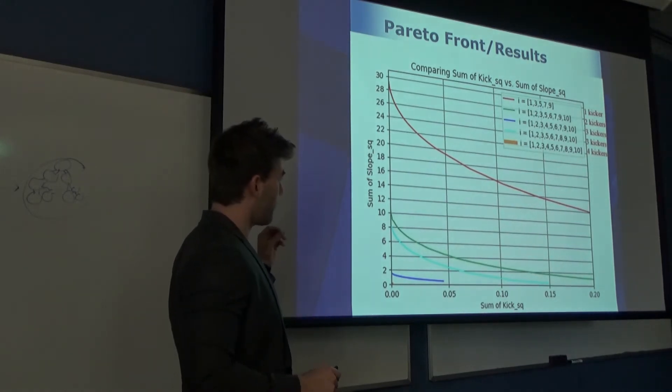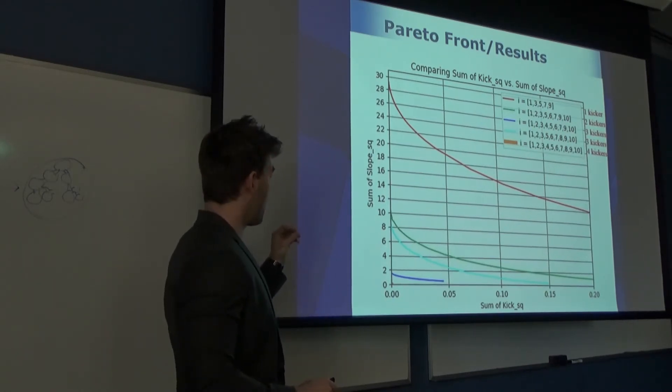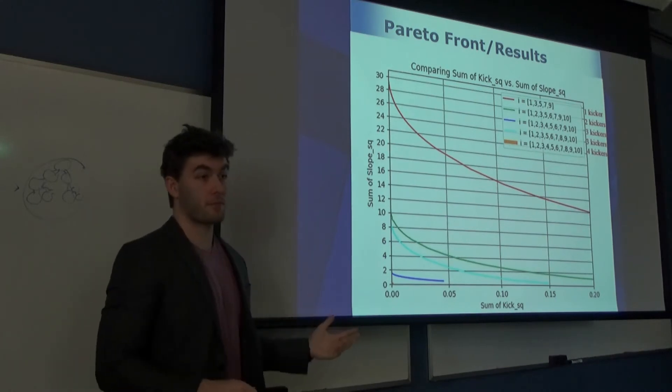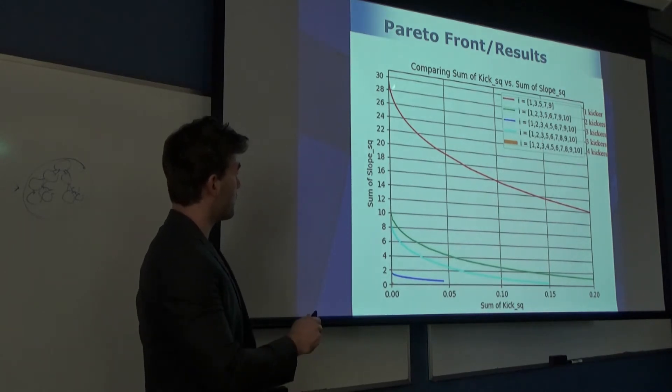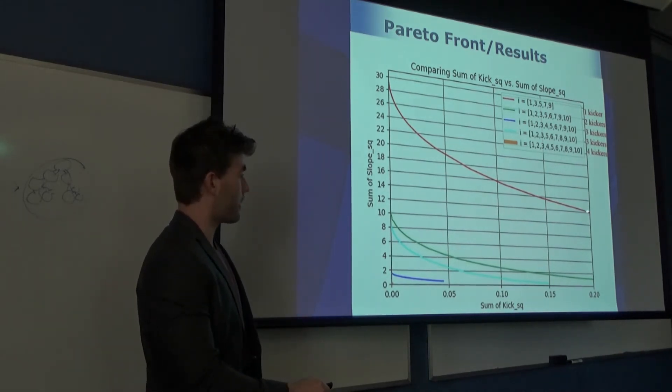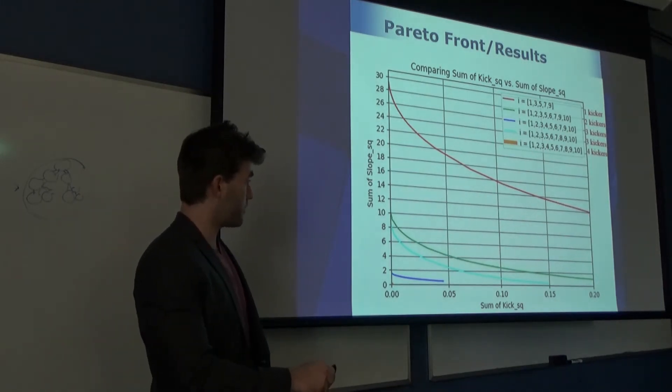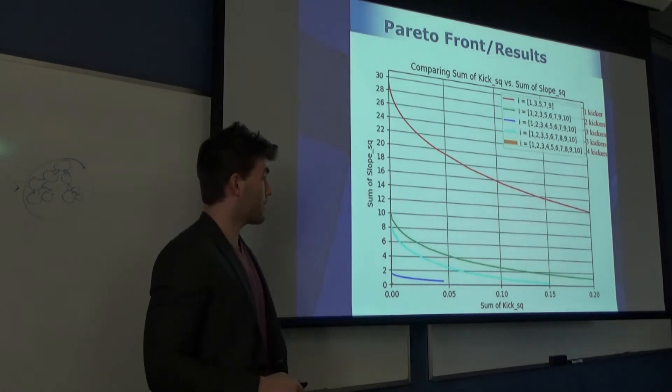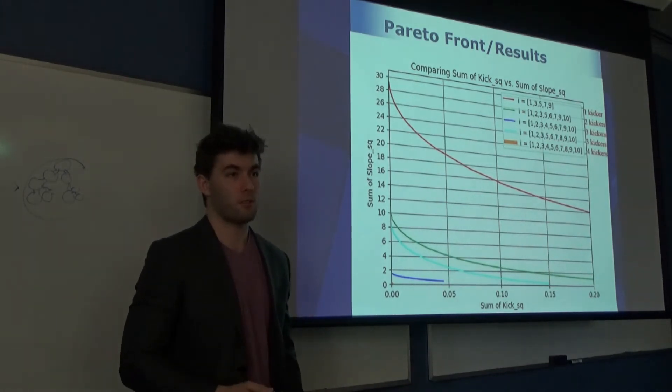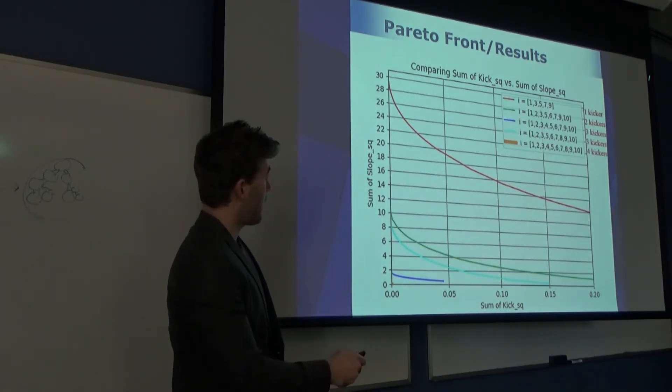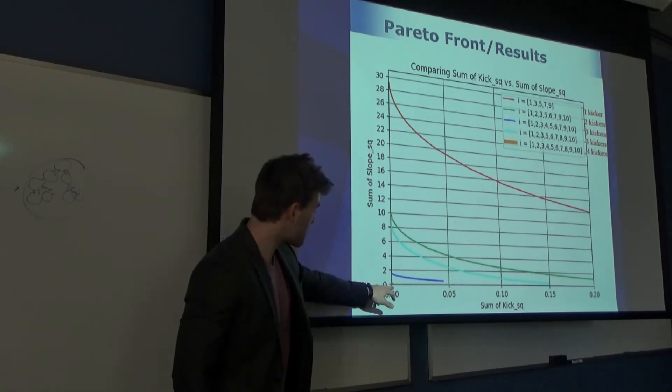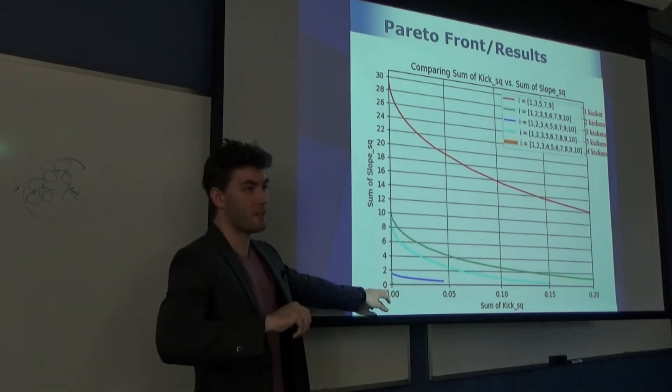The Pareto front makes it abundantly clear that the use of just one kicker has a factor of three times more sum of squared slopes than using two kickers. We have about 30 here and about 10 here. The fact is, no matter how far along you trace that graph, that difference between the two is still about a factor of a third difference. That means that you can weight the slope as much or as little as you want and you're still going to get a much better result if you use a second kicker. Adding a third kicker gives you a better result. Adding a fourth kicker gets you the perfect result: zero kick, zero slope at all intermediate bunches.